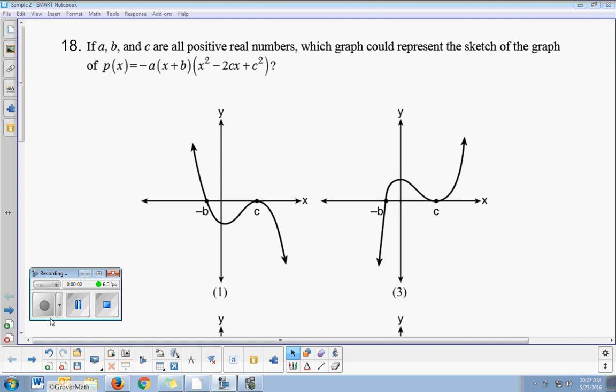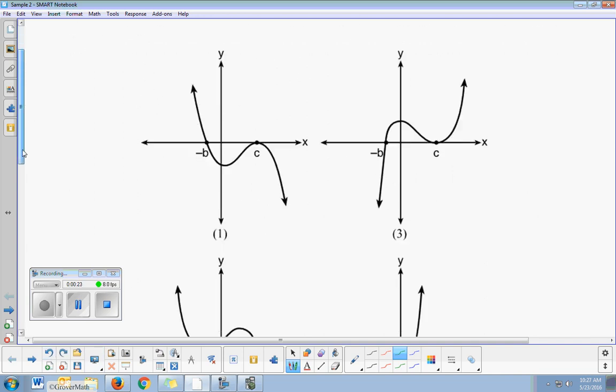Algebra 2 state sample question number 18. If A, B, and C are all positive real numbers - it's important that they're positive there - which graph could represent the sketch of the graph of P of X? Which of these four graphs? This is a multiple choice question, and we want to know which of these graphs could match this.